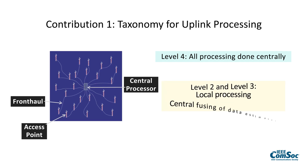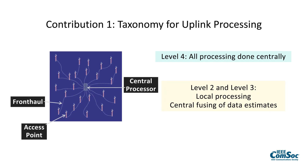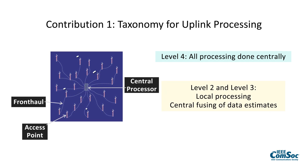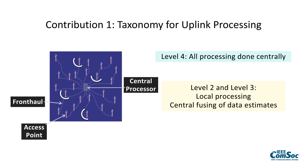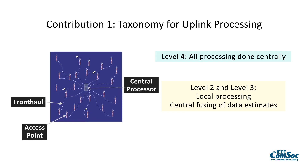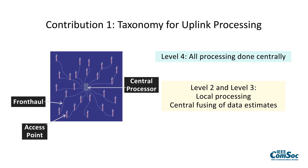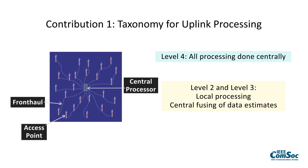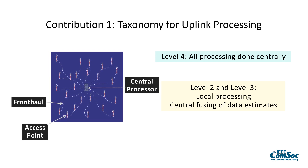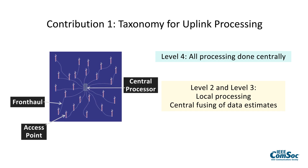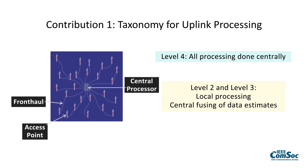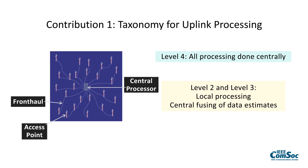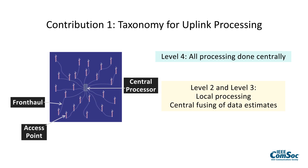At Levels 2 and 3, there is some pre-processing done at each access point. It estimates channels and makes soft estimates of the uplink data, then sends that over the fronthaul to the central processing unit. At Level 3, it combines estimates knowing how good each one is, while at Level 2 it fuses everything together without that side information.